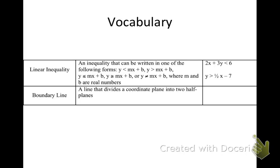A linear inequality is an inequality that can be written in one of the following forms: y is less than mx plus b, y is greater than mx plus b, y is less than or equal to mx plus b, y is greater than or equal to mx plus b, or y cannot equal mx plus b, where m and b are real numbers. Basically, we're talking about equations of lines with inequalities.